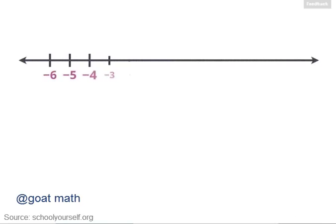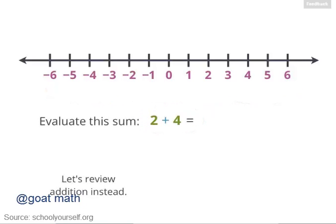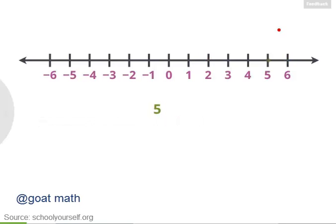Before we get into subtraction, let's draw a number line from negative 6 to positive 6. Starting at 2 and moving 4 to the right leaves you at 6, so 2 plus 4 equals 6. Now let's talk about subtraction. Say we're starting at 5. When you subtract a positive number like 4, that means you're moving left on the number line. So 5 minus 4 means we start at 5 and move 1, 2, 3, 4 to the left. Now we're at 1, so 5 minus 4 equals 1.